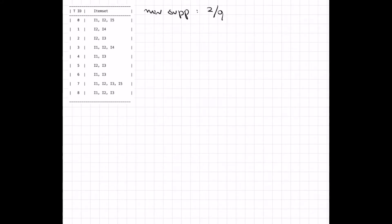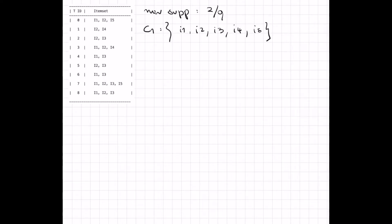The first step is to build C1, the set of candidates of size one. We can easily see that the sets are I1, I2, I3, I4, and I5 — item sets of size one. For simplicity we write them without brackets. Now to build L1 we need to count the frequency of each of these item sets.